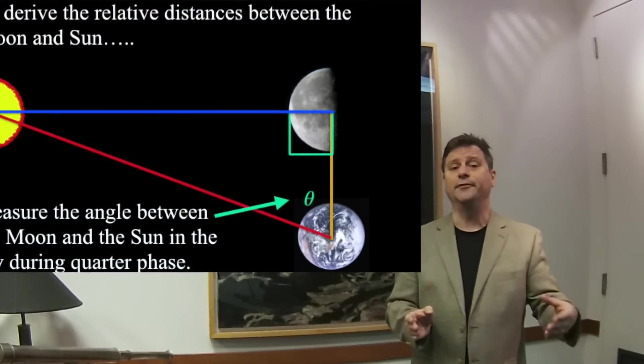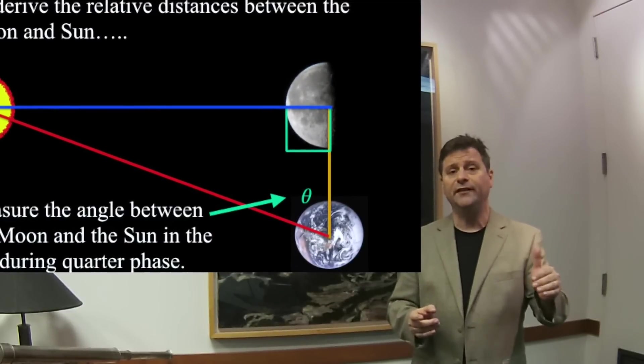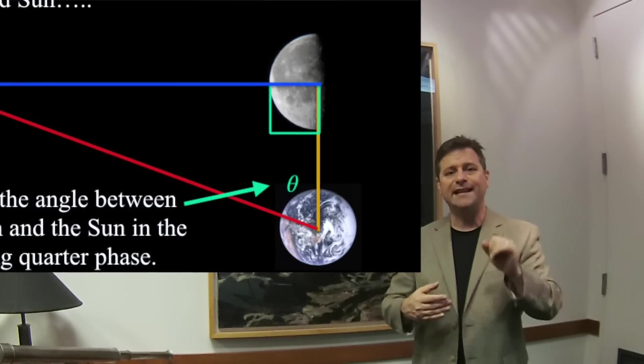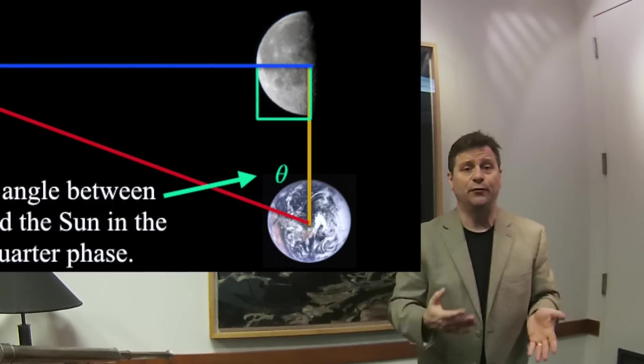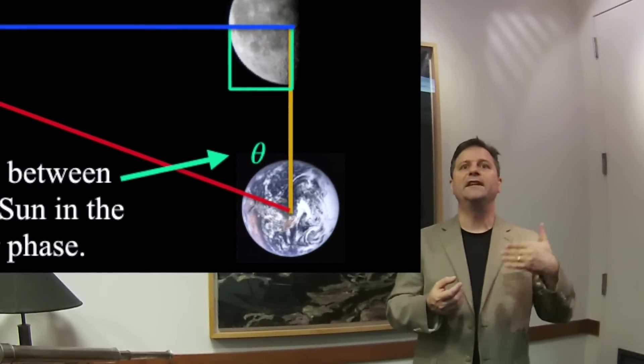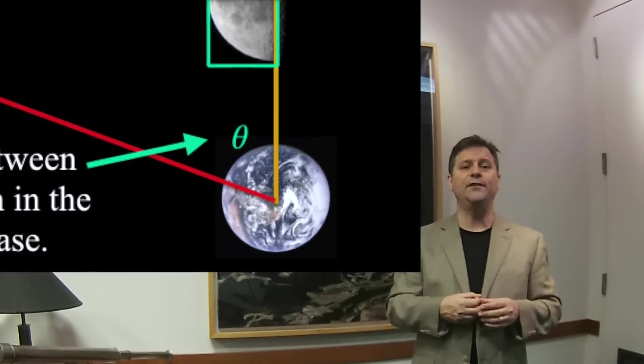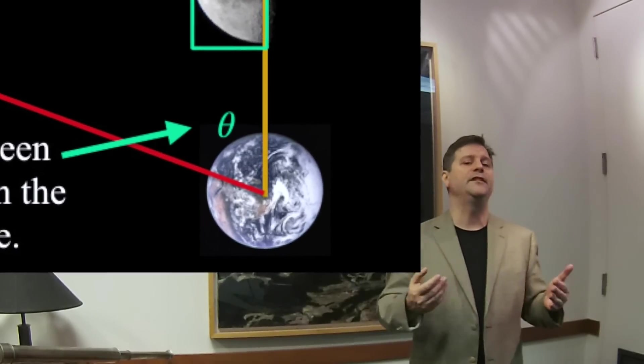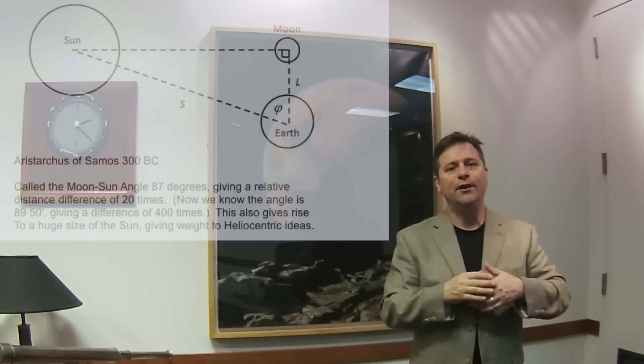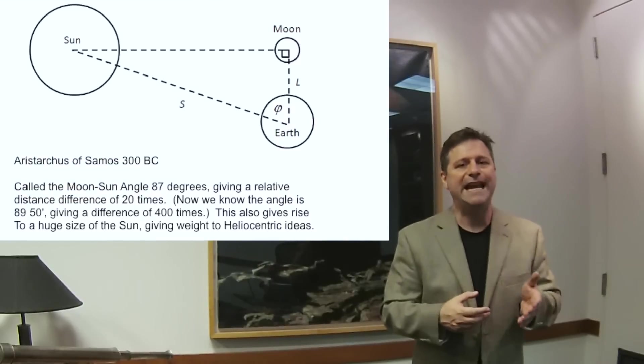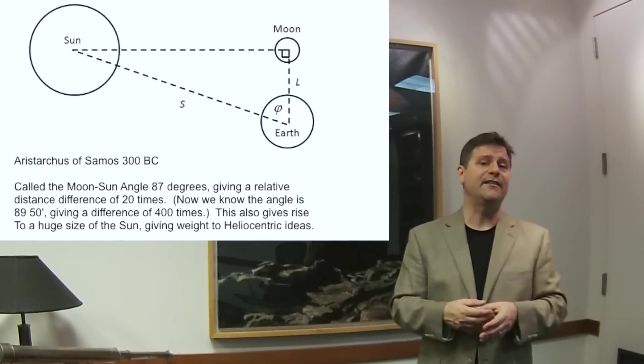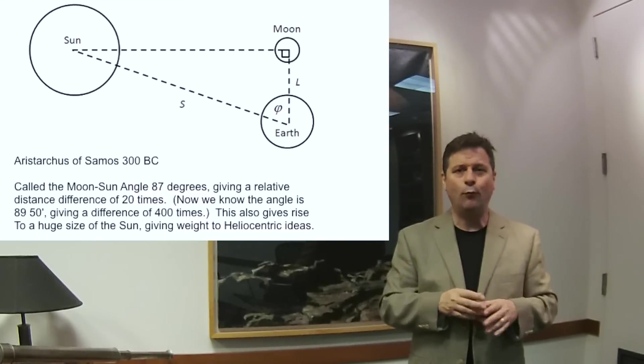And so what he did is he endeavored like crazy to measure the angle in the sky between the moon and the sun. Remember the 90 degree angle of the triangle is where the moon is. But then the angle that we see when we look at the moon and we look at the sun, that is less than 90 degrees. And so we can use trigonometry or specifically the cosine of the angle to get the relative distances between the earth and the sun. So what he measured in the sky was roughly speaking about 87 degrees. That's a pretty good measurement. It's not 90 degrees. It's about 87 degrees.